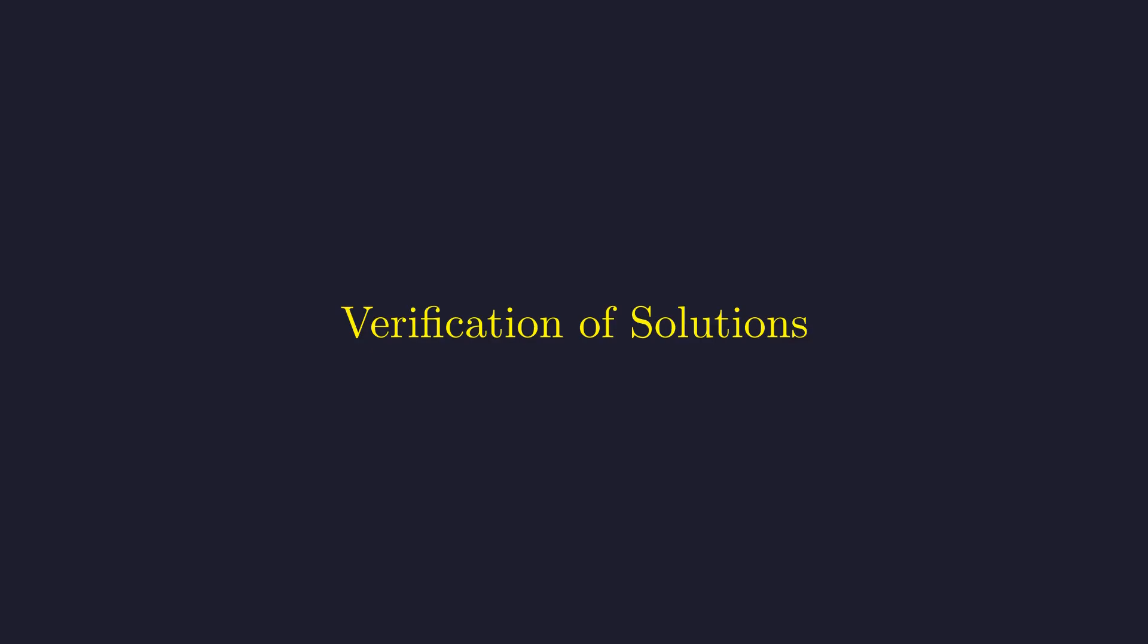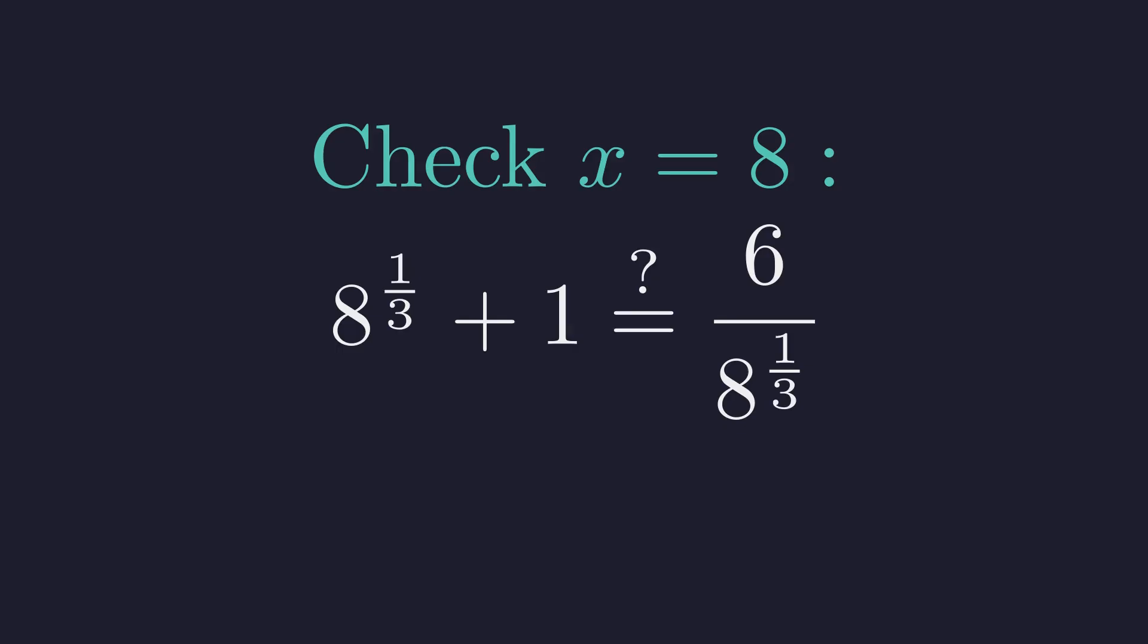Now, it's always good practice to check our work. Let's plug these back into the original equation and see if they actually work. Let's start with x equals eight. Plugging in eight, does eight to the one-third plus one equals six divided by eight to the one-third? Well, the cube root of eight is two. So this becomes two plus one equals six divided by two. Three equals three. Perfect. That works.